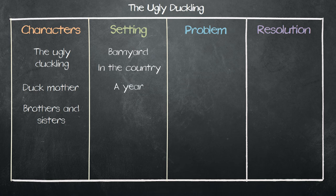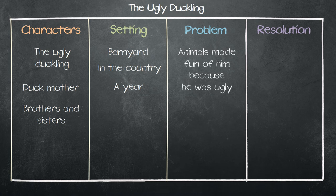Next, ask the students what problem the main characters faced. Write it in the problem box. All the barnyard animals made fun of him because he was ugly.